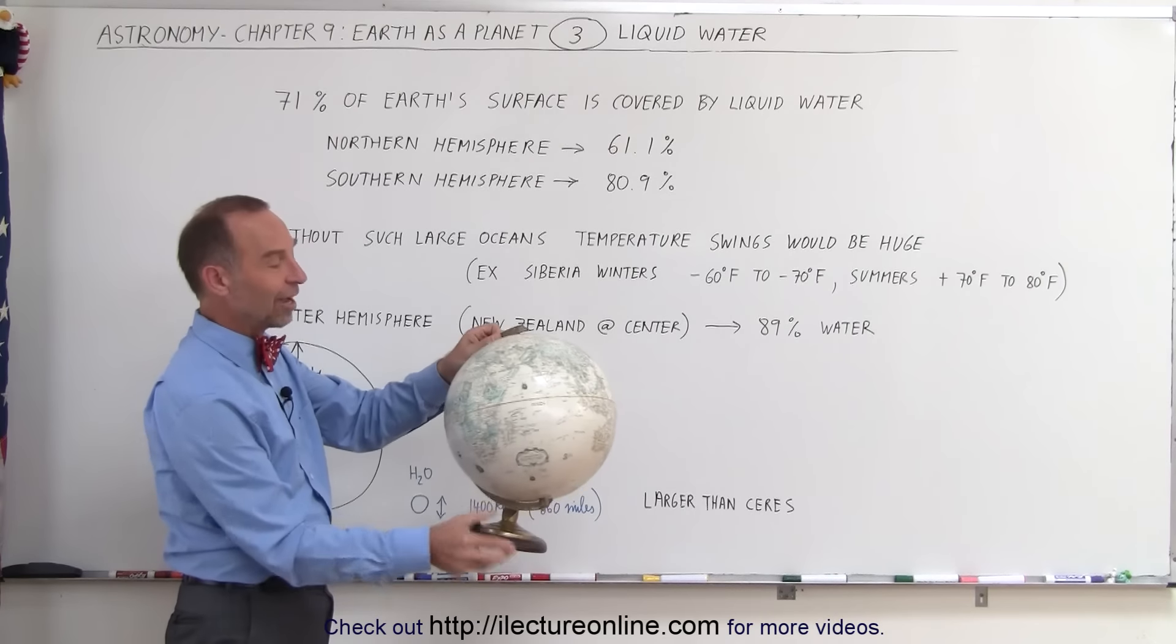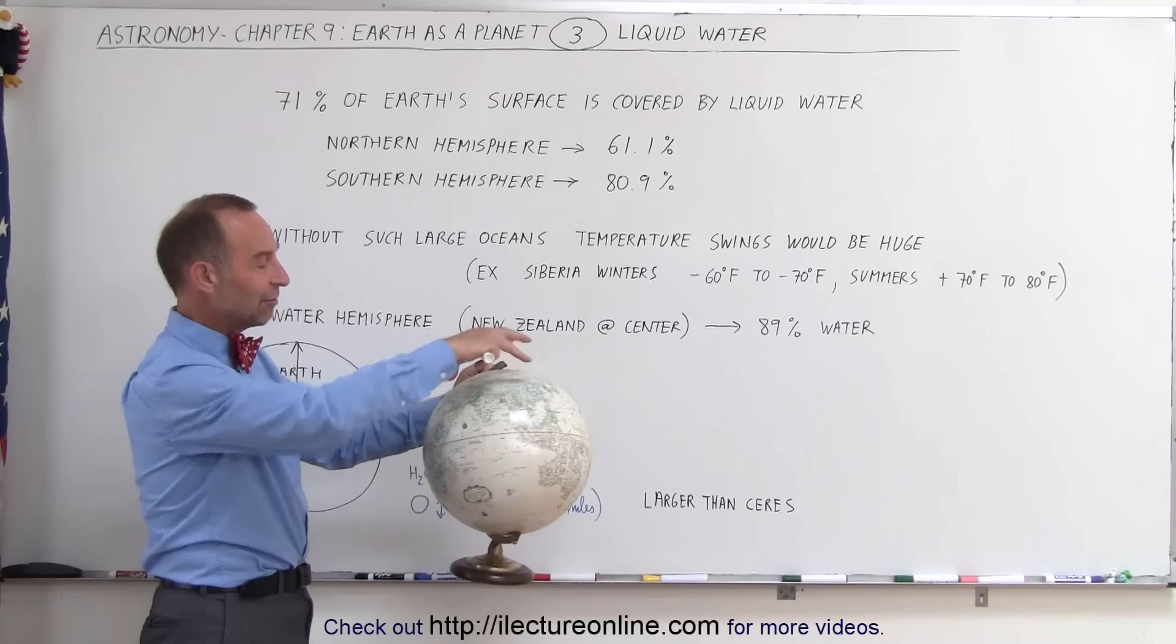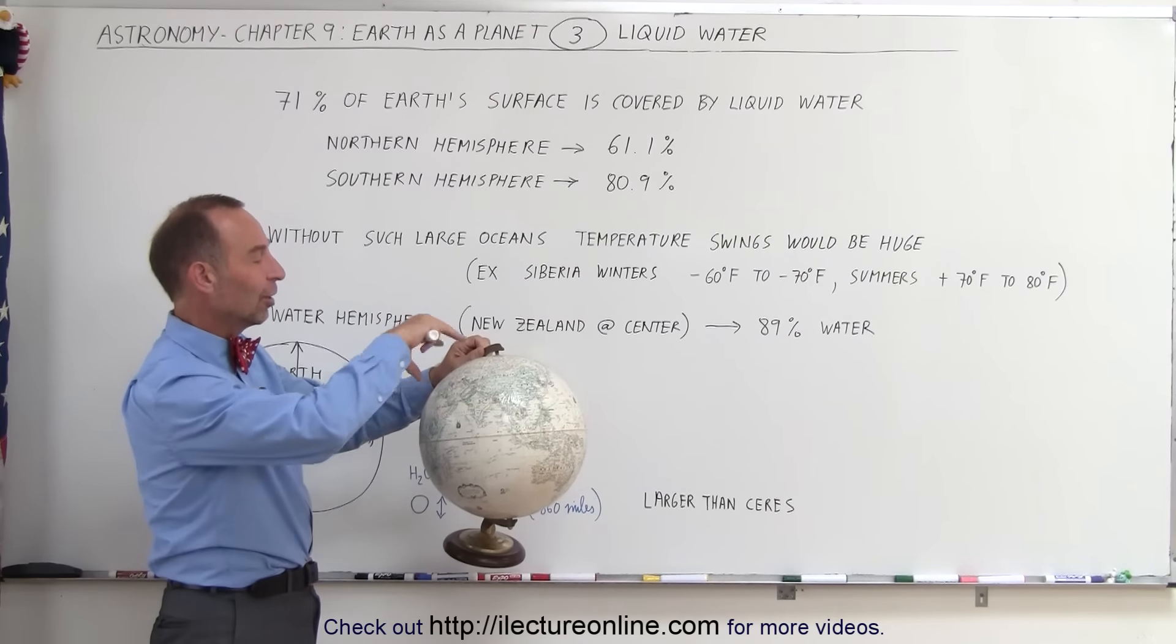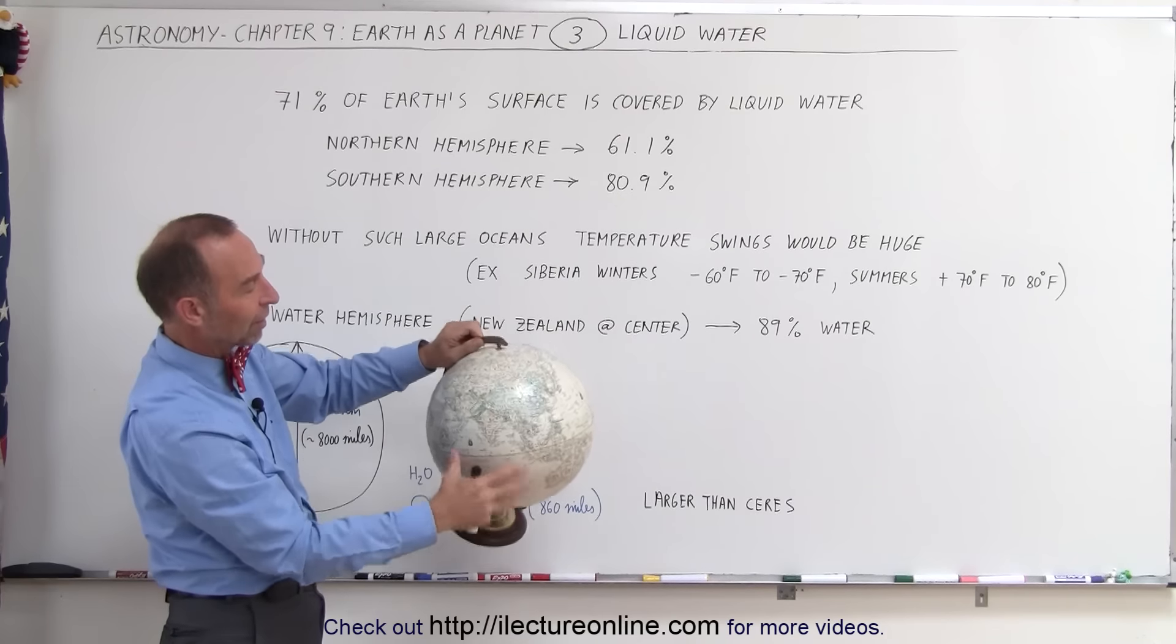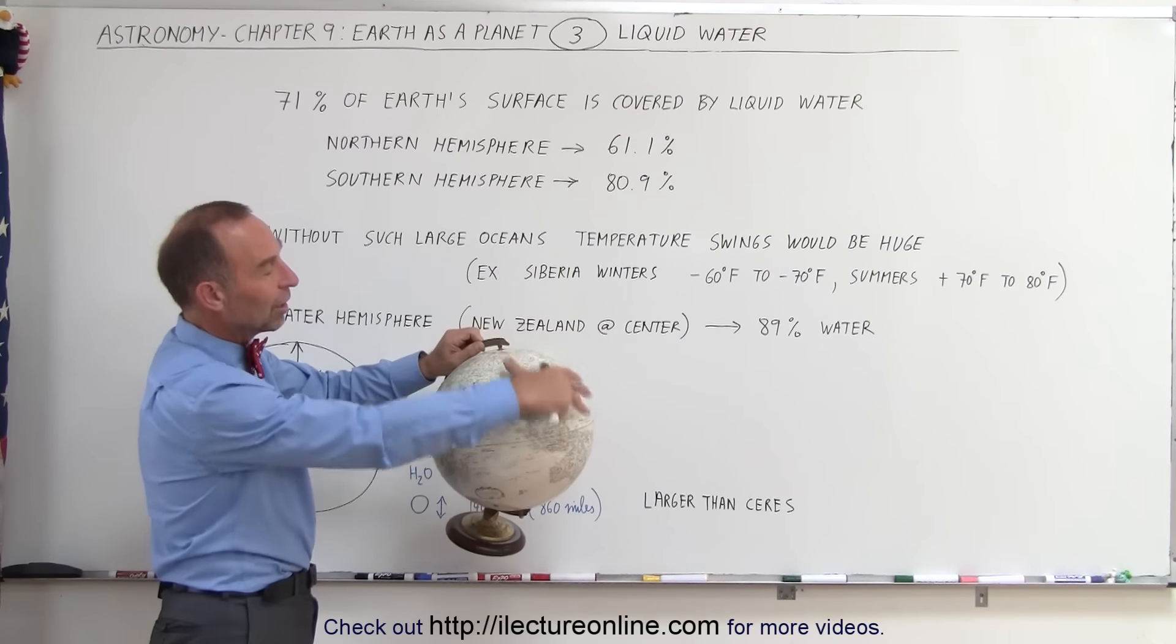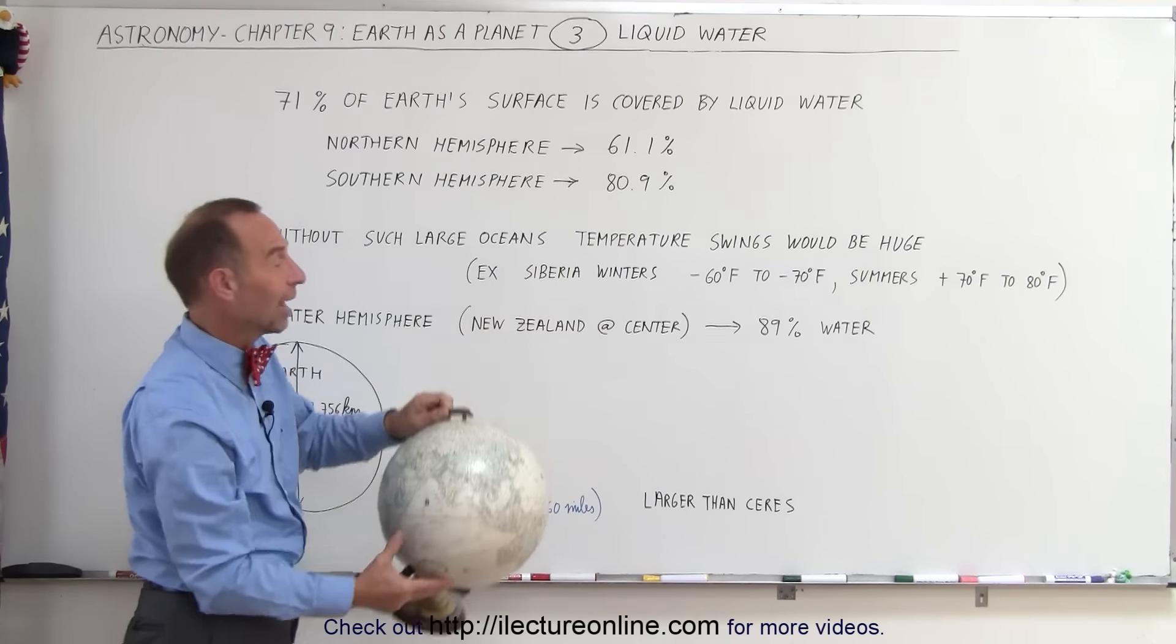Which means that if you look at the other side, when you go directly to the other side, you have these huge land masses of Africa, Europe, Asia, Greenland and parts of North America. And then you realize that from this perspective, the great majority of the Earth is covered by land mass.